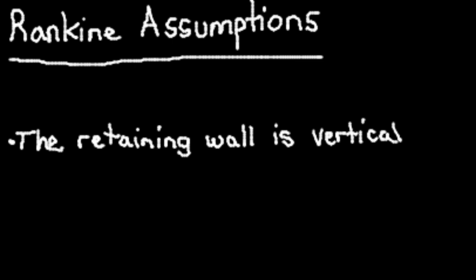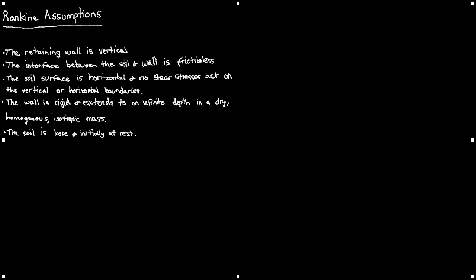First, the retaining wall is vertical. Second, the interface between the wall and the soil is frictionless. The soil surface is horizontal and no shear stresses act on the horizontal and vertical boundaries. The wall is rigid and extends to an infinite depth in a dry homogeneous isotropic mass. And lastly, the soil is loose and initially in an at rest state.